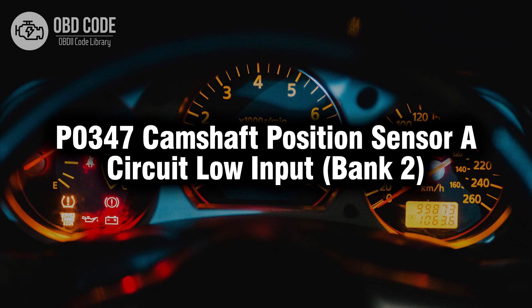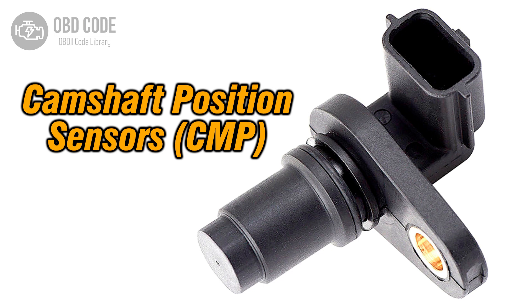Welcome. In this video we will talk about code P0347, its symptoms, causes and possible solutions. The P0347 trouble code is associated with camshaft position sensor circuit low input in bank 2, indicating a low input signal from the camshaft position sensor.